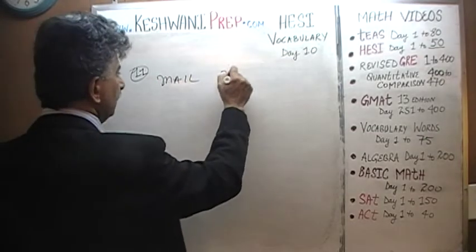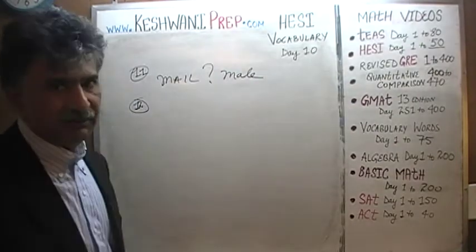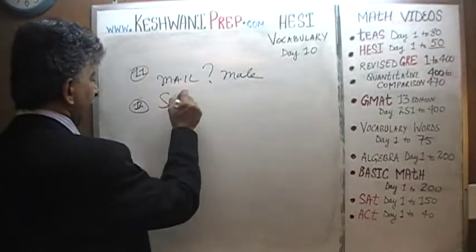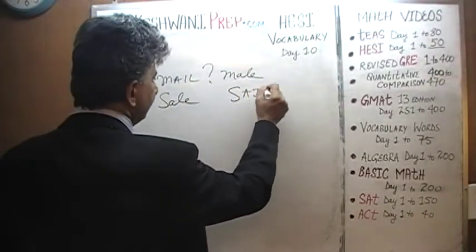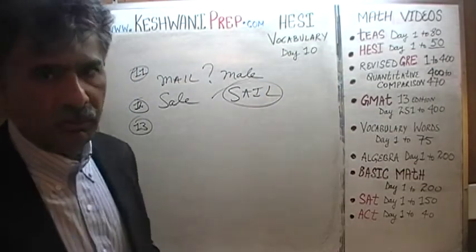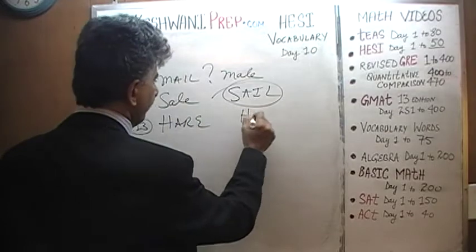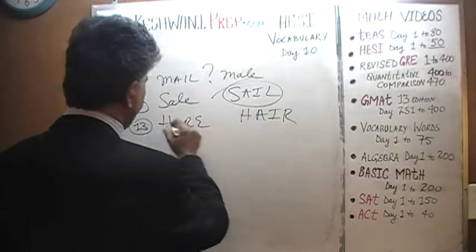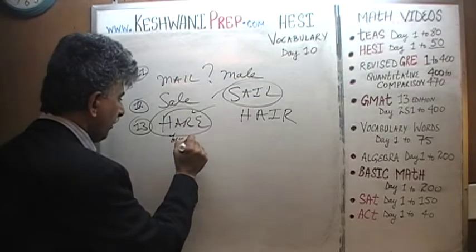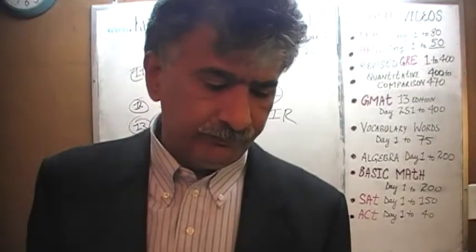Number eleven: 'male' and 'mail' — though I'm not exactly 100% sure about the pronunciation. 'Sail' and 'sale' — 'sail' as in to go on water. 'Hare' and 'hair' — 'hare' as in a bunny rabbit. You must have heard the story of the hare and the tortoise.